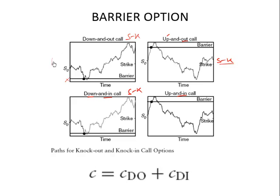So these are barrier options — on hitting a particular barrier, the option may go out of existence or it may come into existence. In an 'out' option, the option goes out of existence if the barrier is hit. In an 'in' option, the option comes into existence if the barrier is hit.